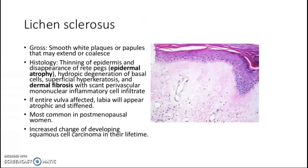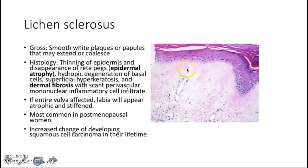Lichen sclerosis grossly presents as a smooth white plaque or papule that may extend or coalesce. Microscopically, it will present as thinning of the epidermis with the disappearance of the rete pegs, also called epidermal atrophy, hydropic degeneration of basal cells, superficial hyperkeratosis, and dermal fibrosis with scant perivascular mononuclear inflammatory cell infiltrate. If the entire vulva is affected, the labia will appear atrophic and stiffened. This condition is most common in postmenopausal women and has an increased risk of developing squamous cell carcinoma.